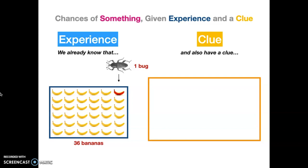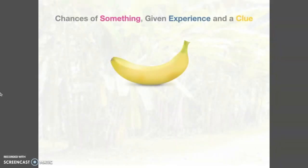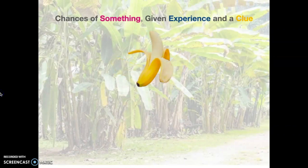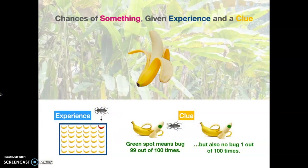We've got one bug out of 36 bananas. But we also have a clue, which is if you open the banana up 99 out of 100 times, there's going to be a bug when you see a green spot. You're in a forest of bananas and you grab a banana. Open it up. There's no green spot. What are the chances that there's going to be a bug in there? Is it one out of 36?